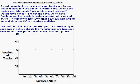The profit is $500 per car and $700 per truck. How many of each type of vehicle should the manufacturer produce each week to maximize profit? What is the maximum profit?